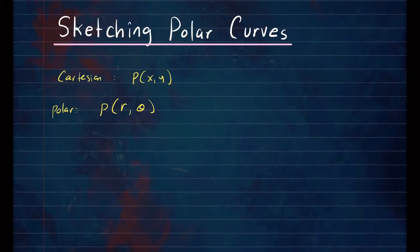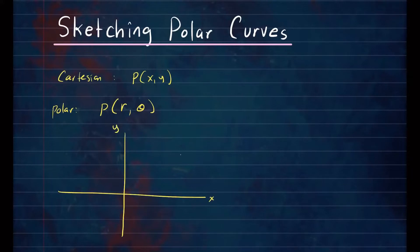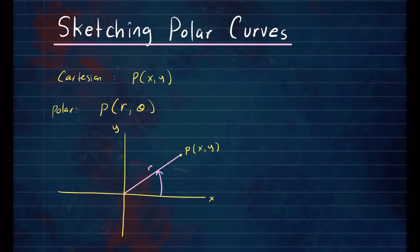Think about it this way. If this is my x, y plane, and I want to plot a point P, it is given in terms of x, y. In polar coordinates, the same point can be represented in terms of radius. R is the radial distance from the origin to that point. This angle — that tells you how far to open from the positive x-axis, which we also call the polar axis — this is theta. So the same point can be written as (r, theta).